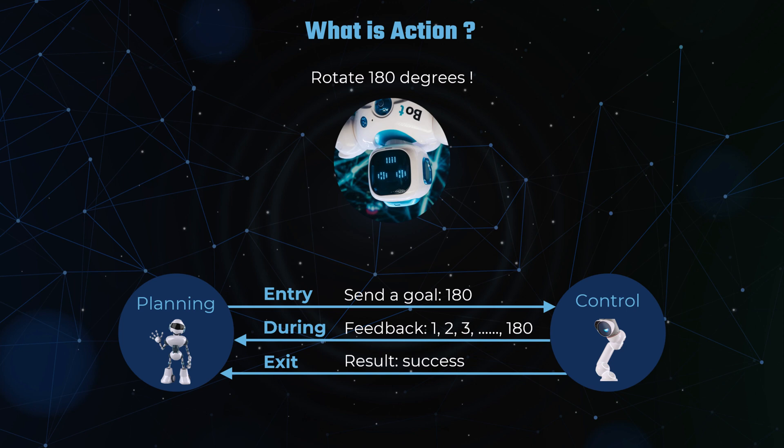In this scenario, the control subsystem is called the action server. It is the entity that accepts the remote procedure request and performs the specified procedure. It is also responsible for sending feedback as the action progresses and responding to cancellation or preemption requests. The planning subsystem is called the action client. It is the entity that requests the action server to perform a procedure on its behalf. The action client creates the initial message containing the command and waits for the action server to execute the sequence and return the result, with feedback provided along the way.